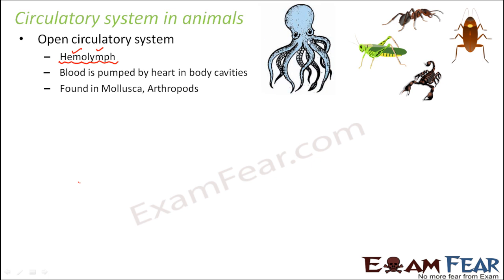For example, the octopus or insects — all these have the open circulatory system. Since the blood is not enclosed in vessels, the pressure is quite low. When you enclose something in a small vessel the pressure increases, but here since blood is present in all the open spaces, the pressure is quite less. Therefore, the animal must move in order to make the blood move — if the animal is static for a long time, the blood also doesn't move much because no pressure is created inside the body.